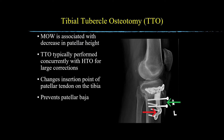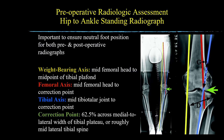This lateral radiograph depicts a medial opening wedge HTO with plate and screw fixation, as shown by the red arrow, in conjunction with the TTO secured by two screws, as shown by the green arrow.